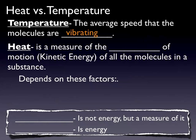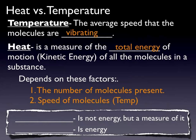Heat is the total amount of movement in the whole matter. Temperature is the average speed of the molecules; heat is the overall total. If you have two beakers of water both at room temperature, the larger one has a greater amount of heat — they have the same average speed of molecules, but because there are more molecules, that beaker has greater heat. Heat depends on two things: how fast the molecules are moving and how many molecules there are.